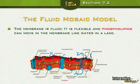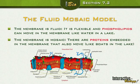It's also considered to be mosaic because we have a bunch of proteins in the membrane that also move. You have a bunch of individual proteins and protein complexes all throughout the plasma membrane. So we have the phospholipids and we have the proteins — this is why we call it the fluid mosaic model.